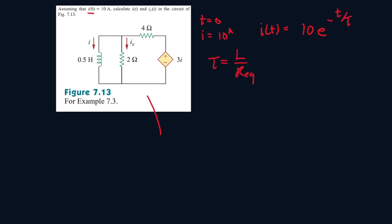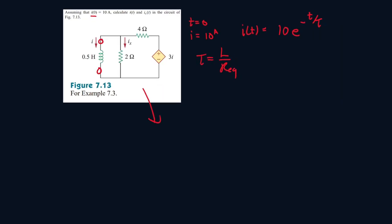Now, we have to redraw the circuit to find the resistance equivalent between these two terminals of the inductance. We can't turn off this because this is a dependent source, so we will have to leave it like this. This is 3i, and this is 4 ohms, and this is 2 ohms.